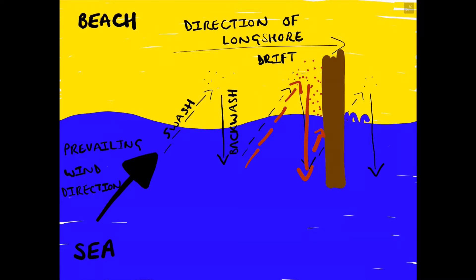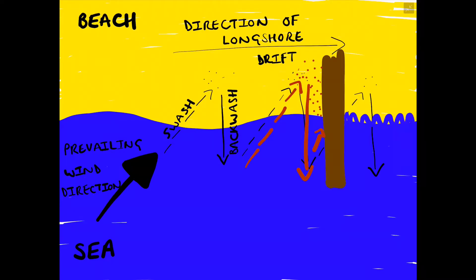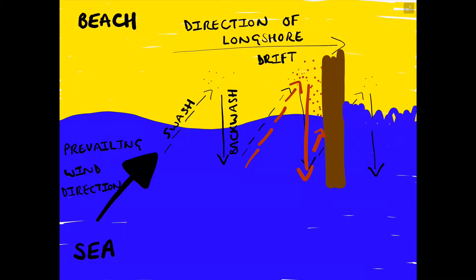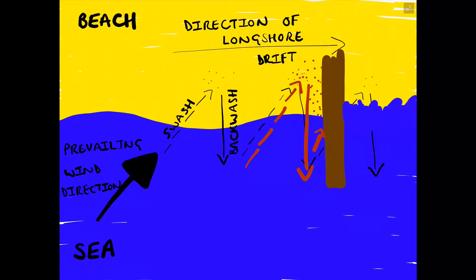However, groins also deprive beaches further down as sediment is not being replenished through the process of longshore drift, but sediment on the other side of the groin is still being transported through longshore drift. Therefore, we can actually get a lot of erosion taking place.